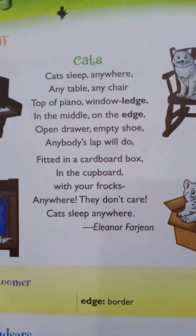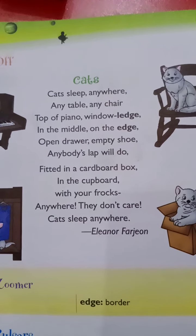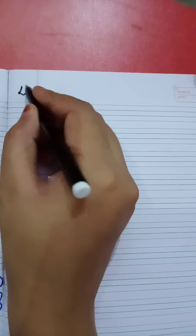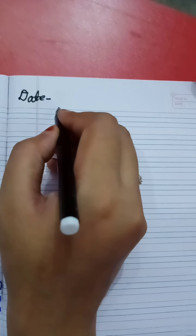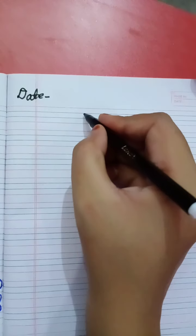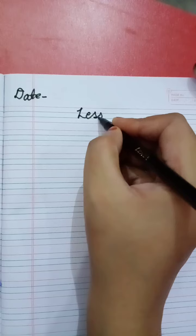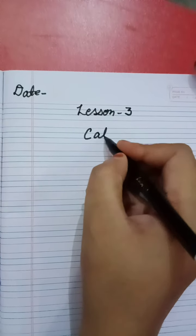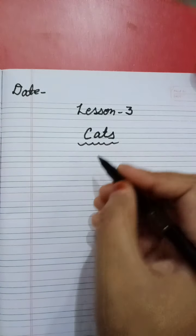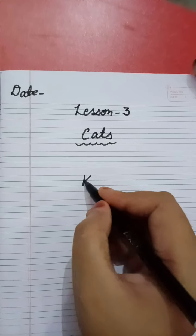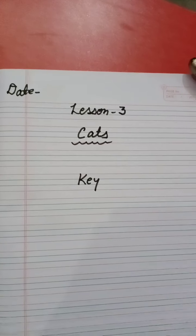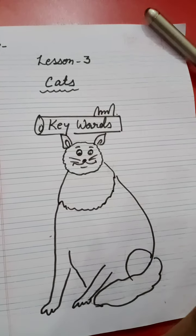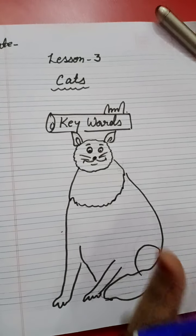This is your work: learn this rhyme with action. Now we will start chapter three. First, write the date on which you are doing the work, then write lesson three, and the lesson name is 'Cats.' The first thing is keywords. Here you will draw a cat — I know my drawing is not very good, but some of you are good painters and can draw it easily.